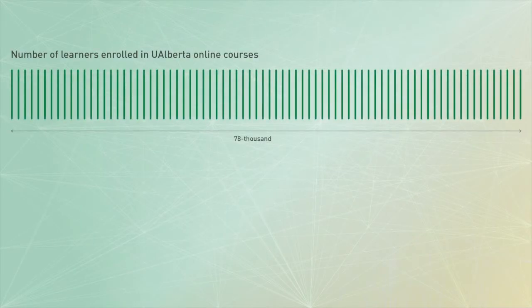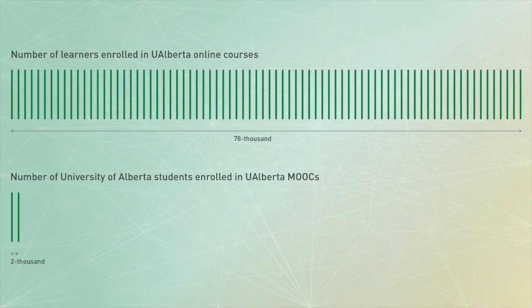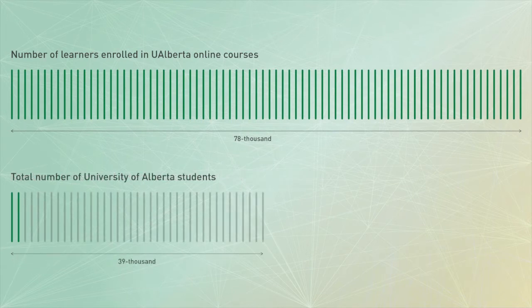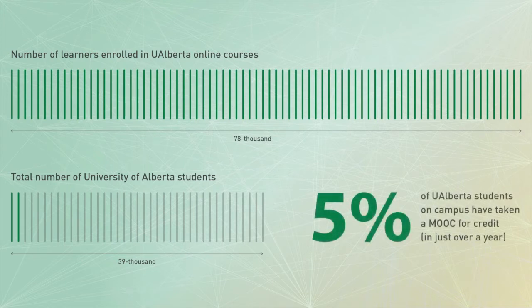At the University of Alberta, our MOOCs are also offered for credit. Since we launched our first MOOC 16 months ago, 78,000 learners have taken our online courses and nearly 2,000 University of Alberta students have taken them for credit on campus in blended or fully online variants. To put these numbers into perspective, the total number of students at the University of Alberta is around 39,000. In just over a year, 5% of the students on campus have already taken a MOOC for credit, while a number of people — twice the size of the entire student body — has engaged with an online University of Alberta course. This is great exposure.